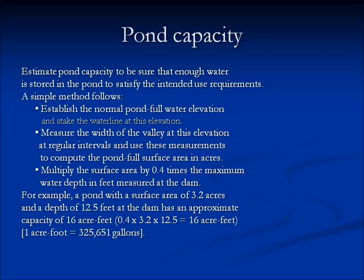For estimating pond capacity, there is a simple calculation. Establish the normal pond-full water elevation and stake the water line at this elevation. Measure the width of the valley at this elevation at regular intervals and use these measurements to compute the pond-full surface area in acres. Then multiply the surface area by 0.4 times the maximum water depth in feet measured at the dam. An example of this calculation is provided in the presentation slides.